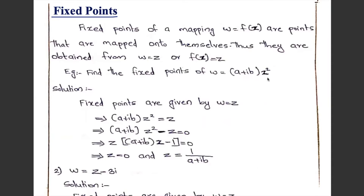First example: find the fixed points of w equal to (a + ib) z squared. Fixed points are those points for which the function maps onto themselves, that is, equating this function with w equal to z.